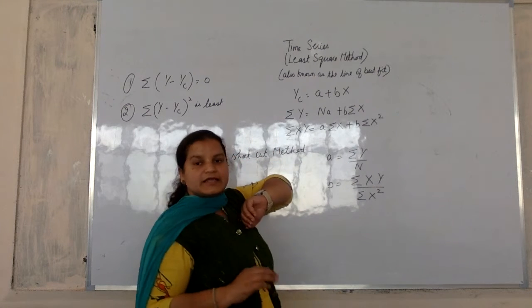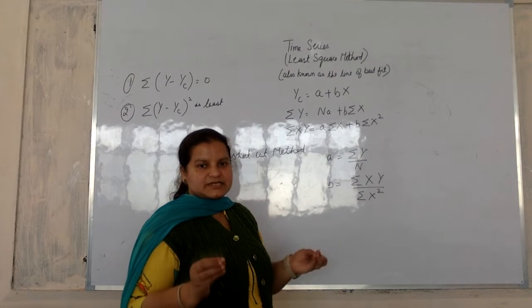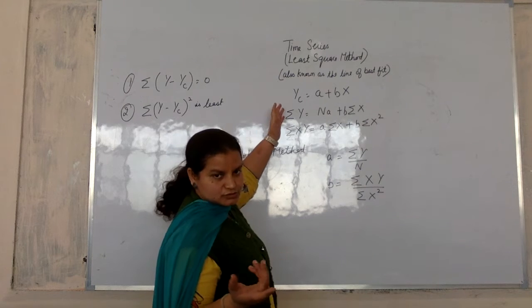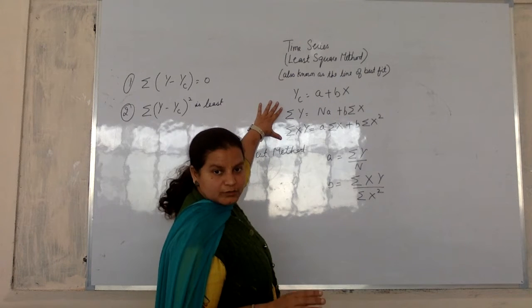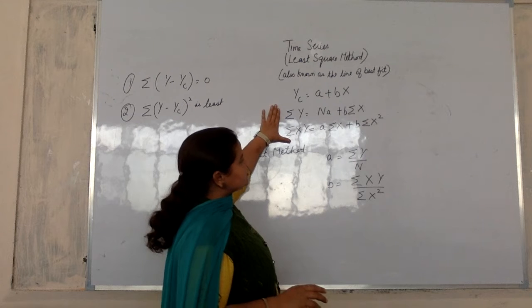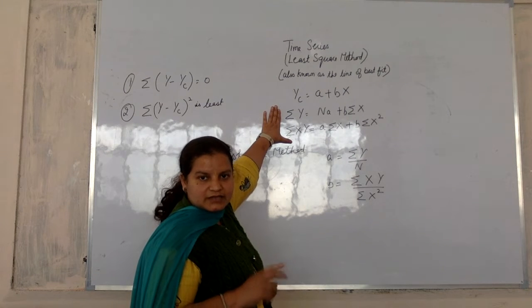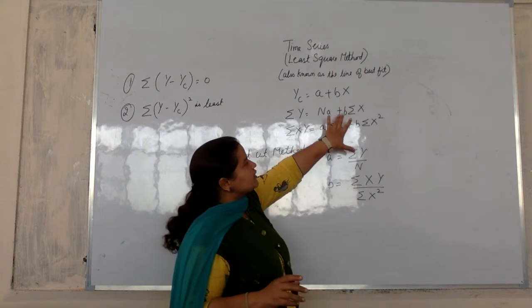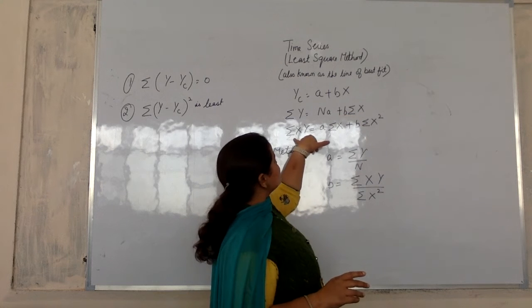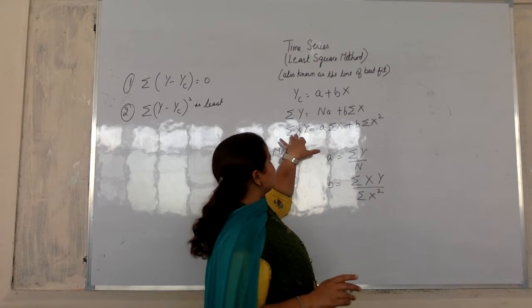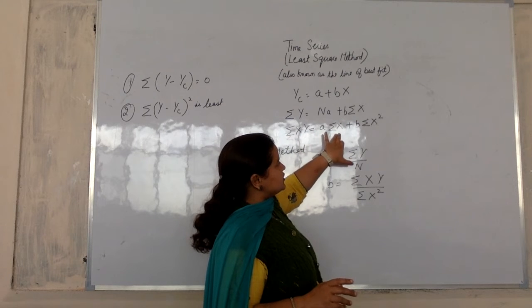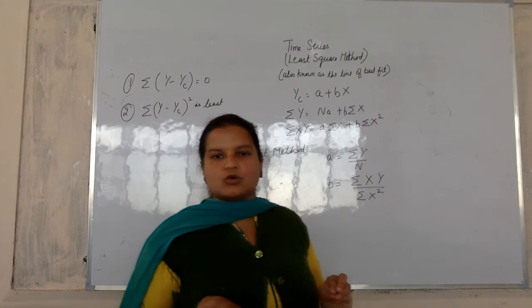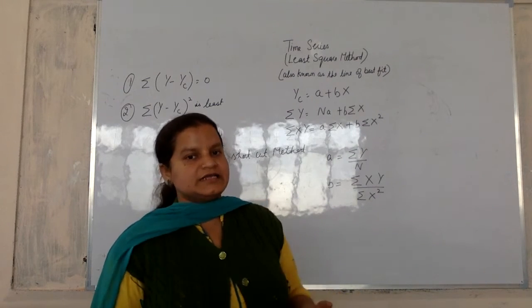To find out this, we have basically two methods. One is our long method or direct method, which we can find out with normal equations. What are the normal equations? We have taken out normal equations from y on x. Summation y is equal to n a plus b summation x. And the other equation is multiplied by x. Summation xy is equal to a summation x plus b summation x square. We have two equations which we can find out through least square method.